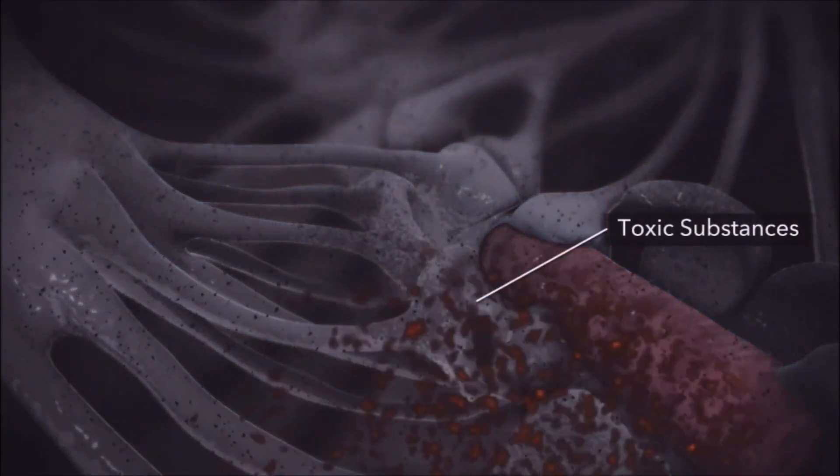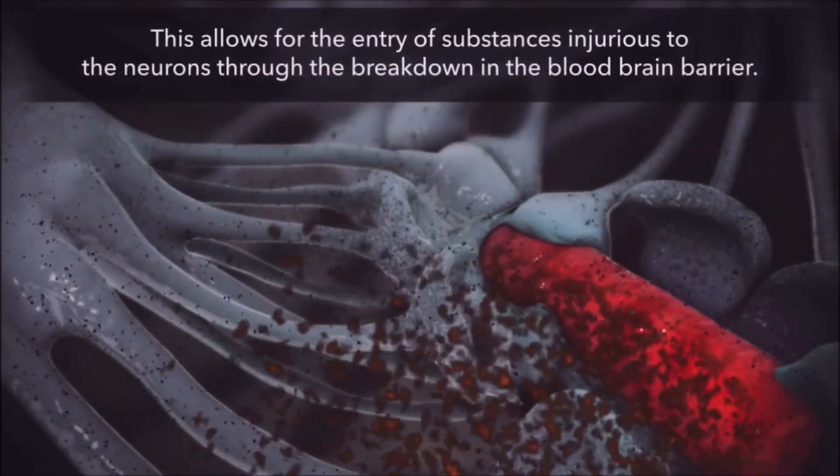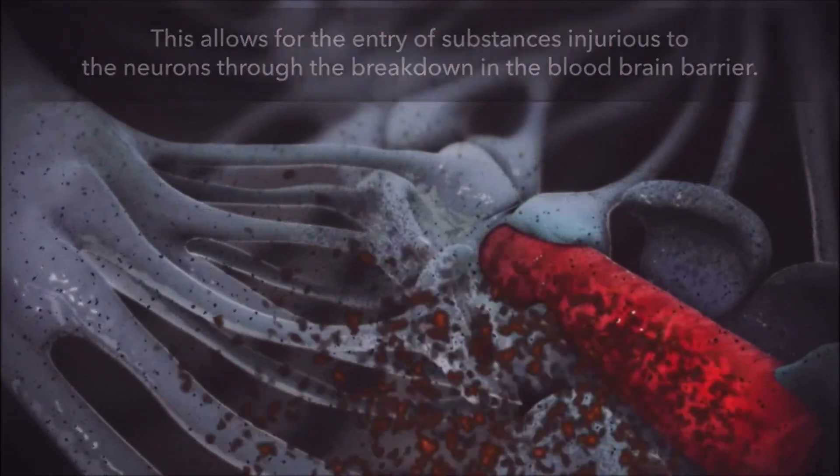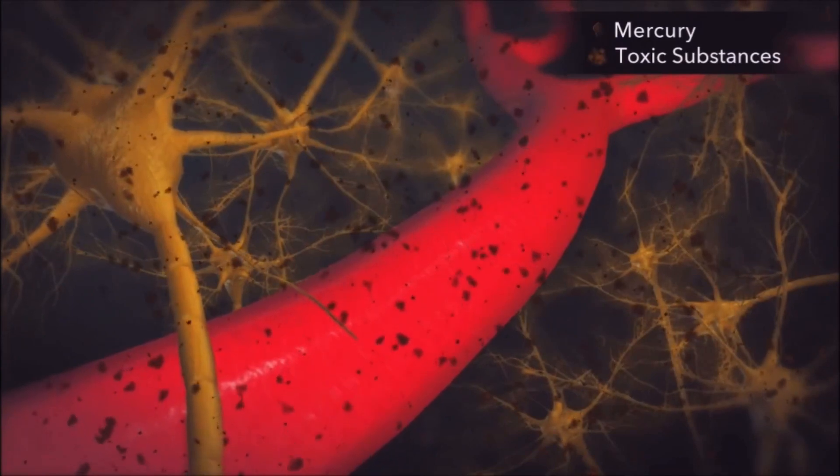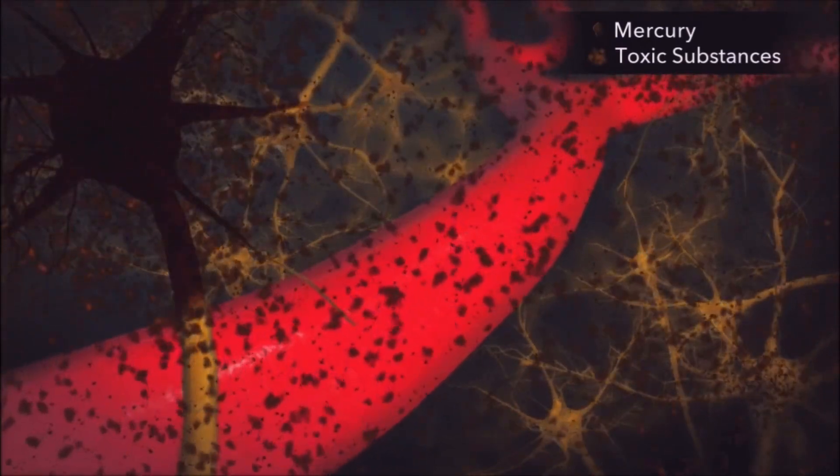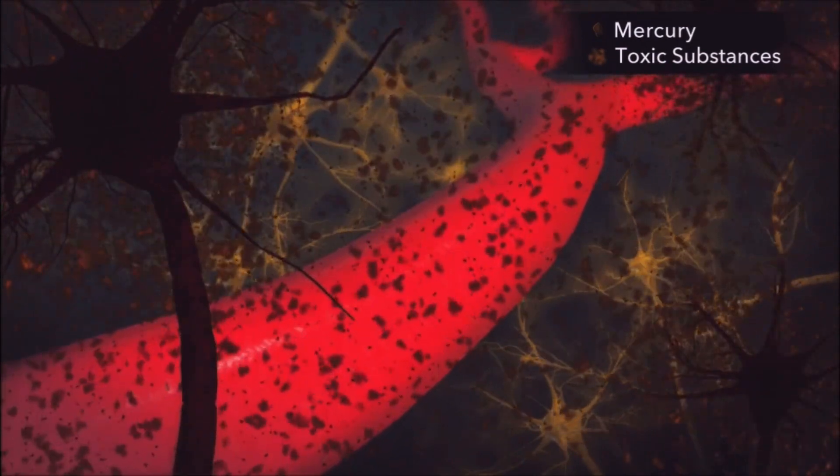While inside the brain and the central nervous system, it then begins to destroy neurons, causing brain damage and damaging the central nervous system that controls organs and organ systems throughout the body.